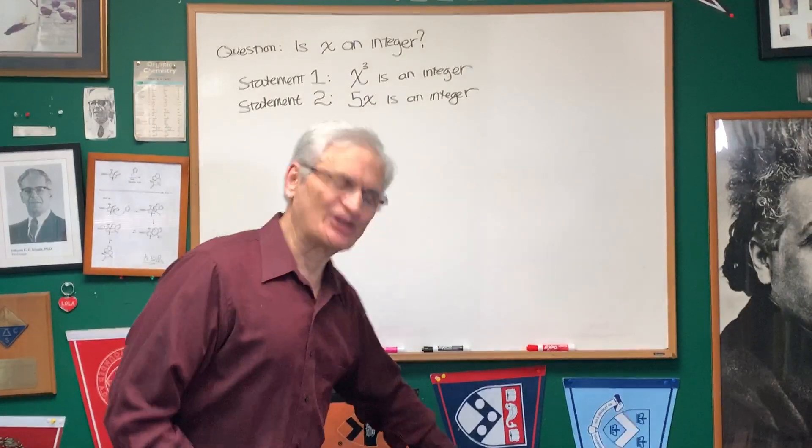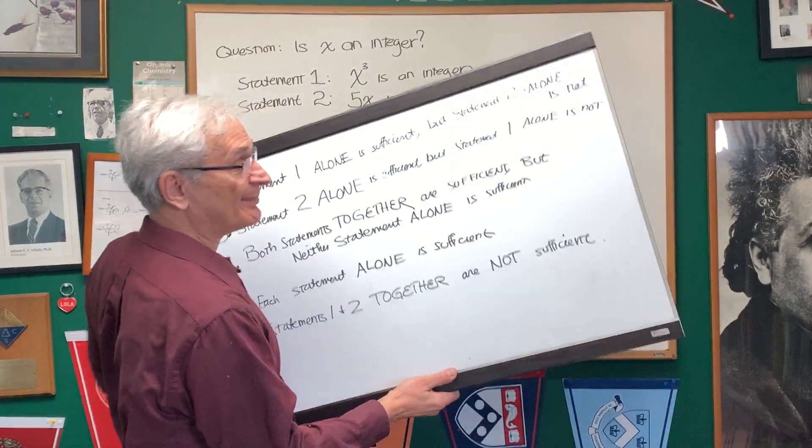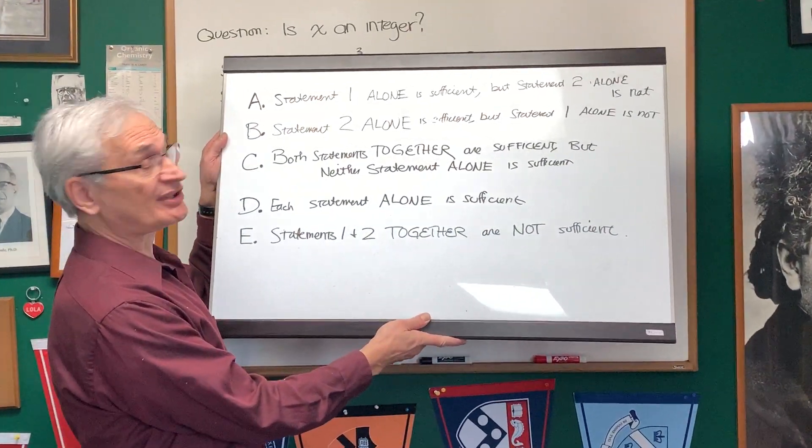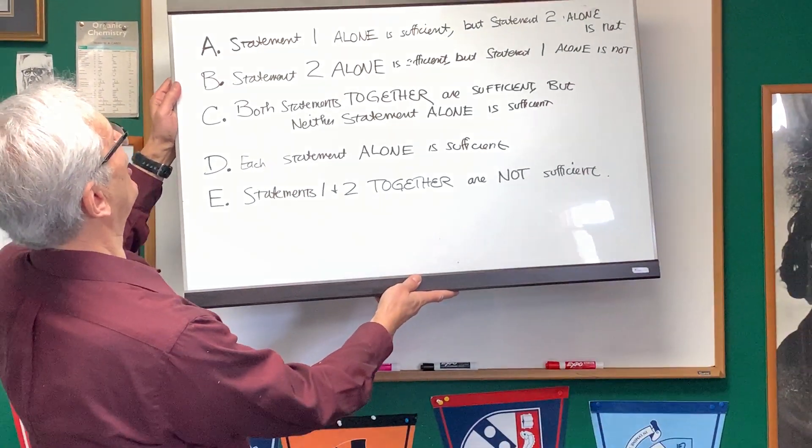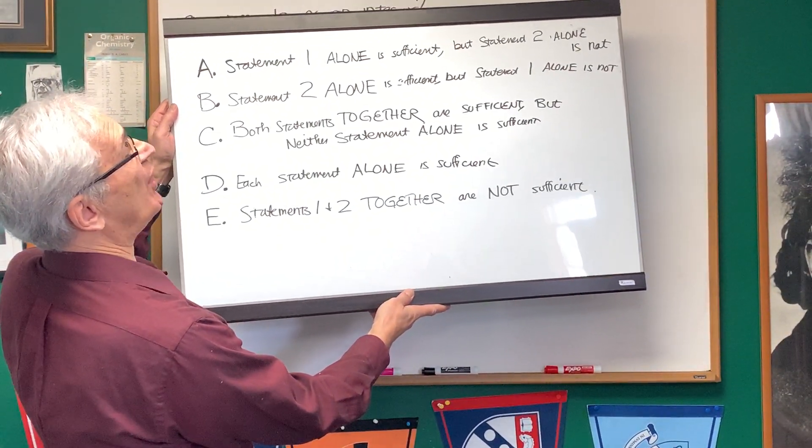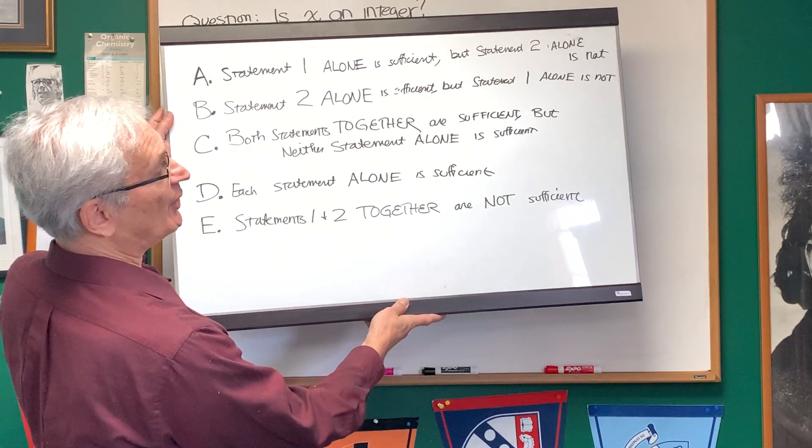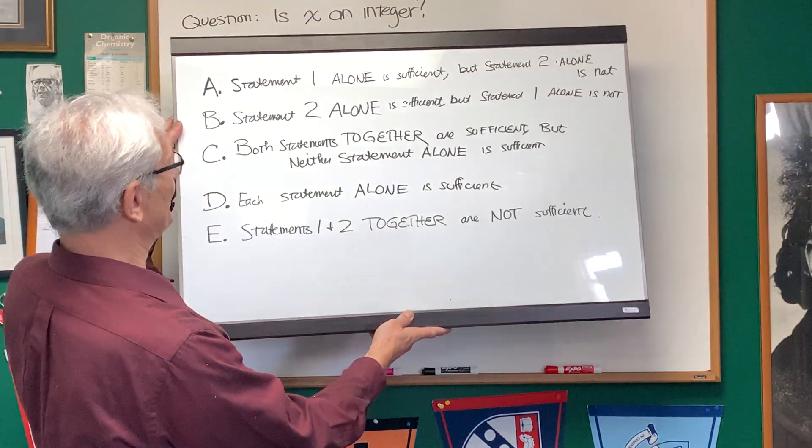These are statement sufficiency questions, and here is the preamble, the exact kind you'd find on a DAT test. Choice A: statement one alone is sufficient to answer the question, but statement two alone is not.